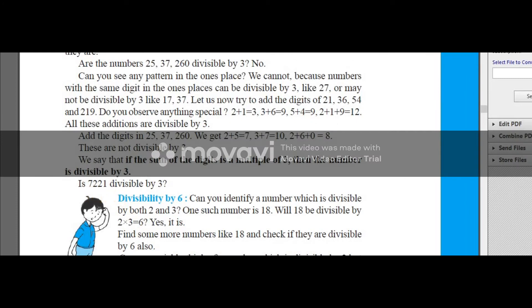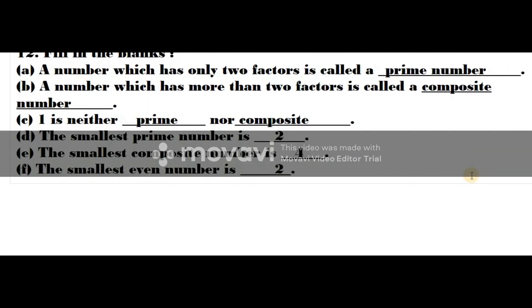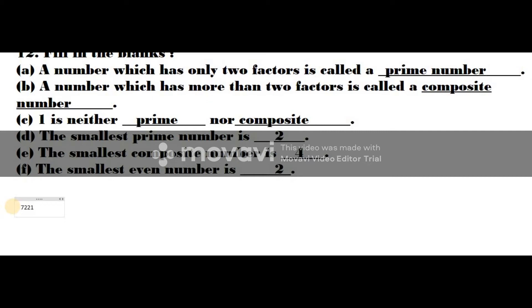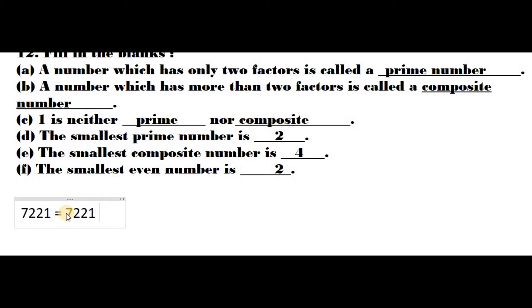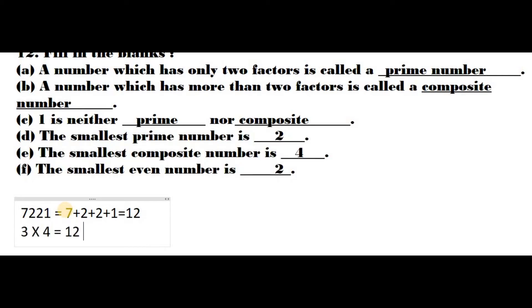Now check: is 7,221 divisible by 3? We will check in the notebook. The question is 7,221. Just add the digits: 7 plus 2 plus 2 plus 1. How much are you getting? 12. Is 12 a multiple of 3? Yes, because 3 multiplied by 4 is equal to 12. So that is the reason 7,221 is divisible by 3.